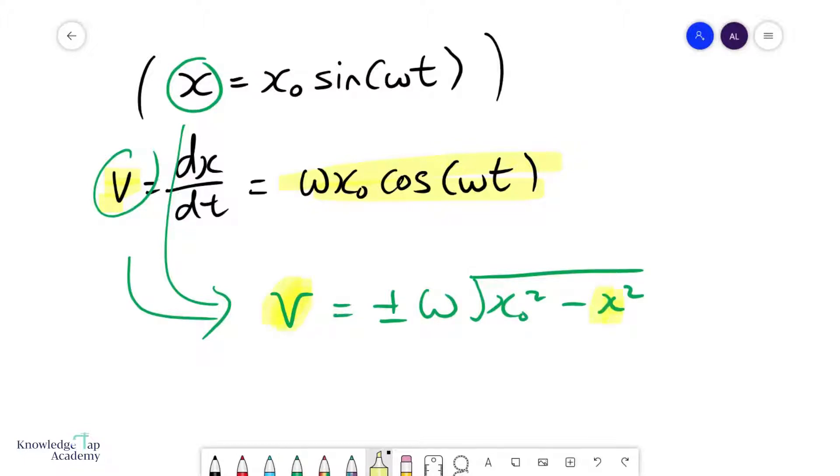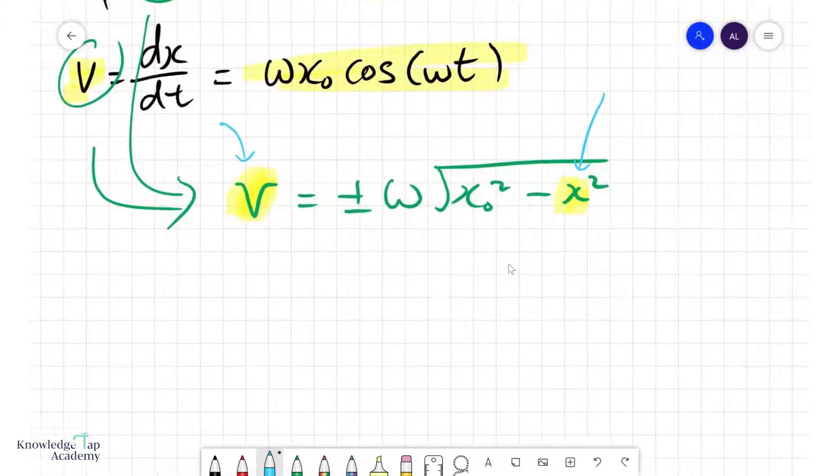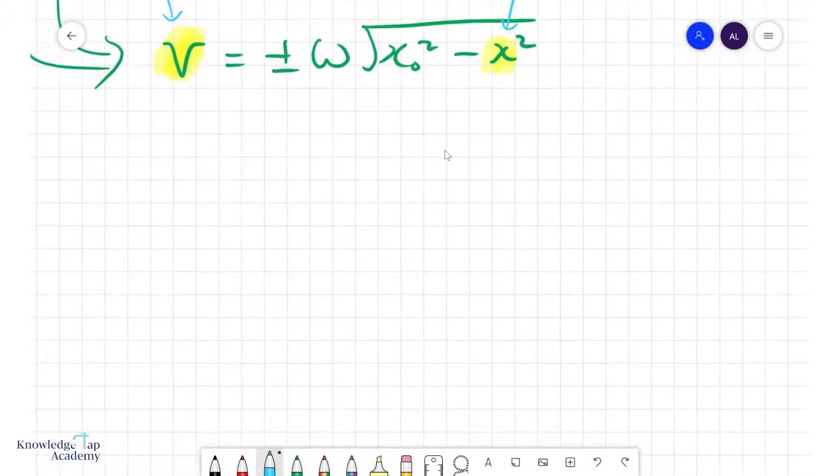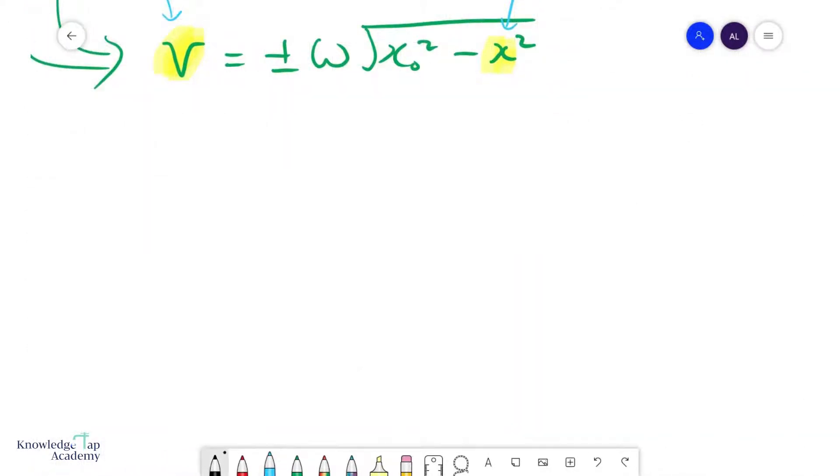So for any given displacement x from equilibrium, I can find the velocity of my object using this formula. There are some interesting results of this. First of all, notice that at equilibrium we know that x equals zero.